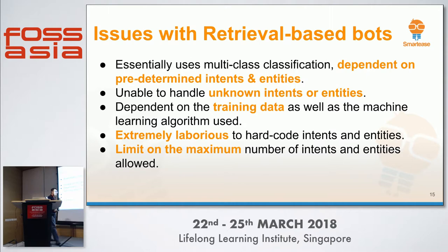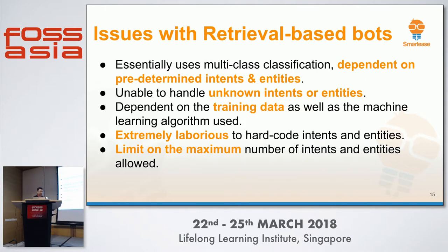Retrieval-based bots seem quite good — not totally dumb, some control, no pure keyword matching. But they are not without problems. You need to hard-code predetermined intents and entities and key in all different ways of expressing one intent. They cannot handle unknown intents, are extremely laborious to set up, and some .ai API services set a maximum number of intents you can define — so it's not unlimited.